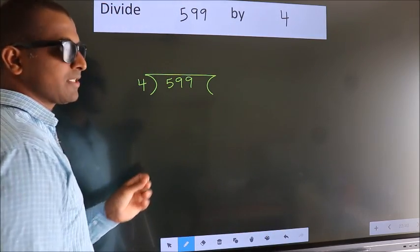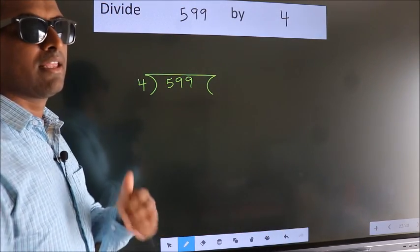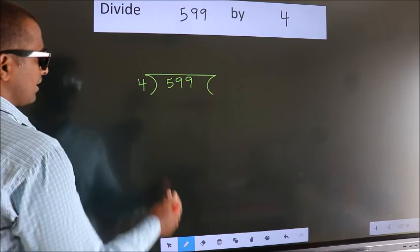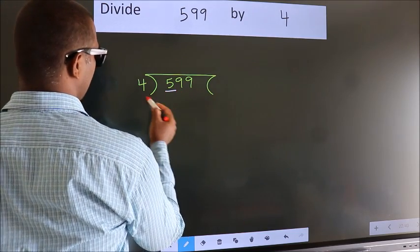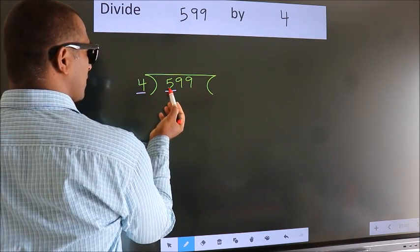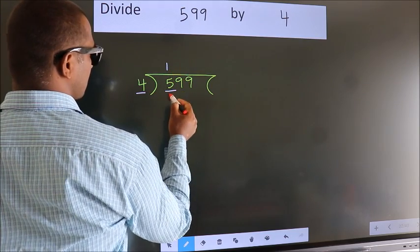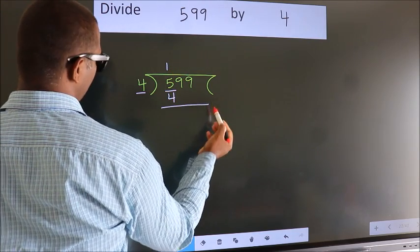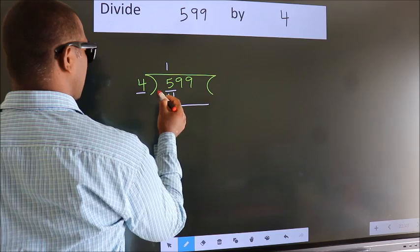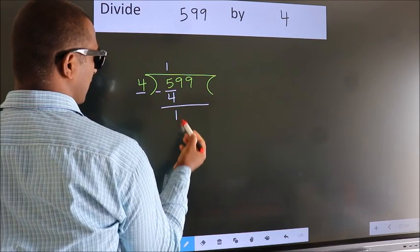This is your step 1. Next. Here we have 5, here 4. A number close to 5 in 4 table is 4 once 4. Now we should subtract. We get 1.